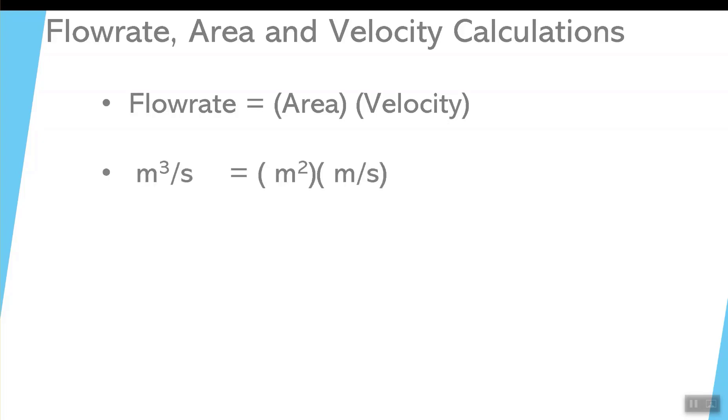The unit for flow rate is a volume, cubic meters per unit of time, in this case it's a second. The area is in meters squared, and the velocity is in meters per second.